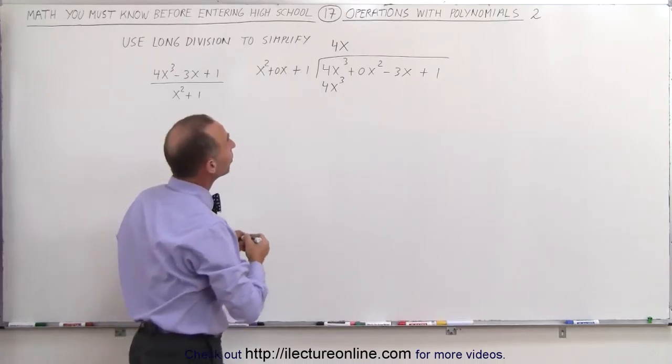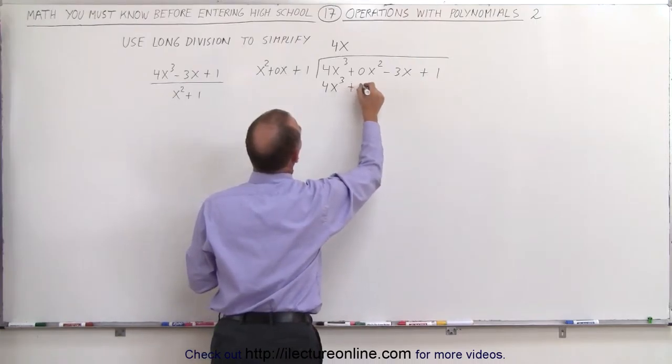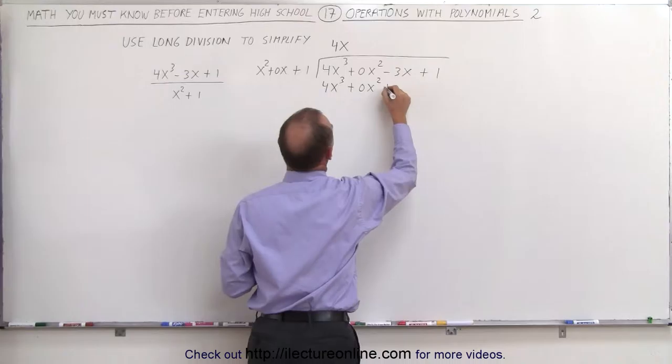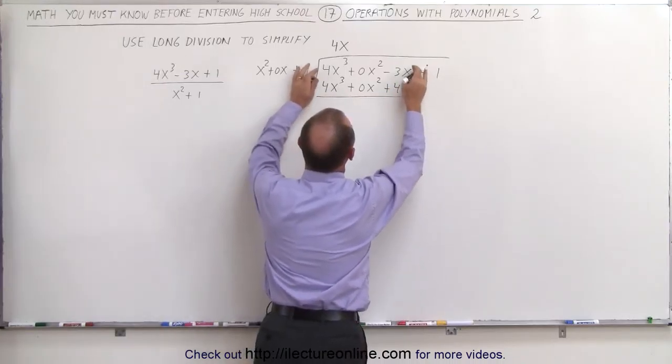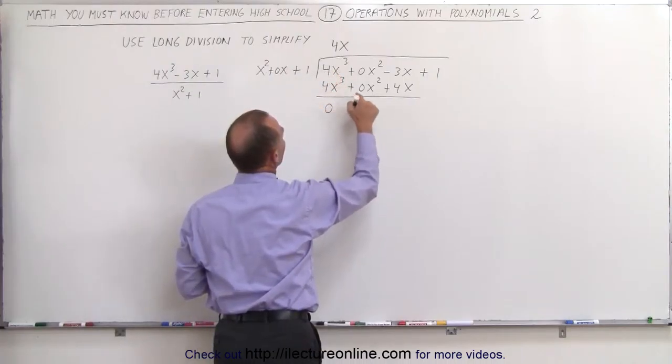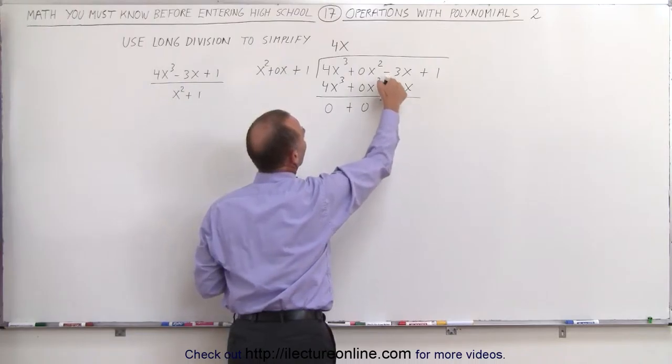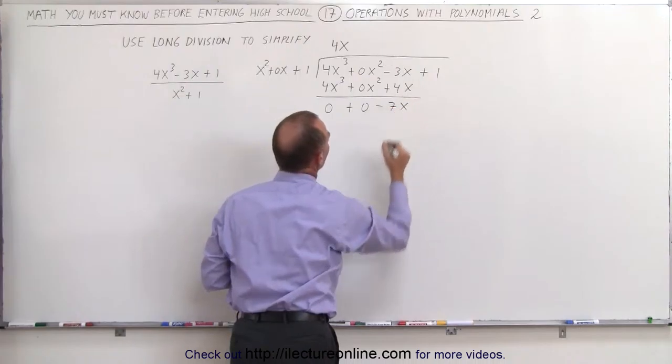But then we also have to multiply the 4x by all these other terms. So 4x times 0x gives us plus 0x². 4x times 1 gives us plus 4x. Now we subtract this polynomial from this polynomial, this minus this gives us 0, this minus this gives us 0, and this subtract from that. So minus 3x minus 4x gives us a minus 7x.